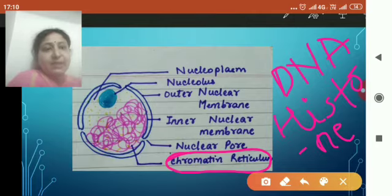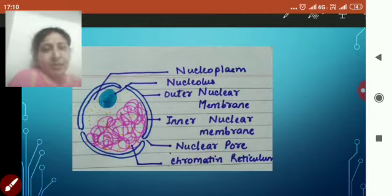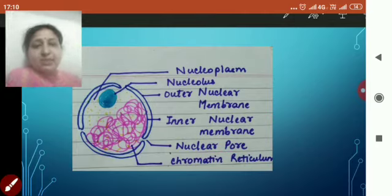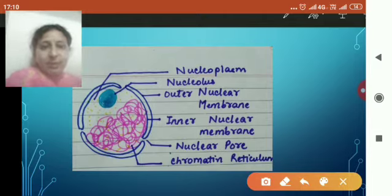These histone proteins are absent in prokaryotic cell. Now because DNA is present and DNA is the hereditary material or the genetic material,